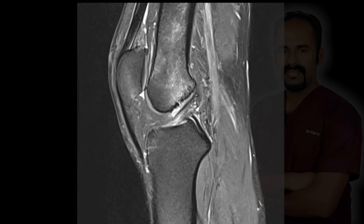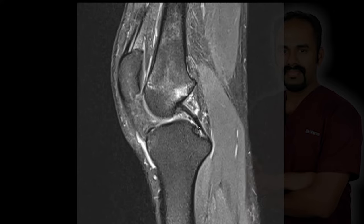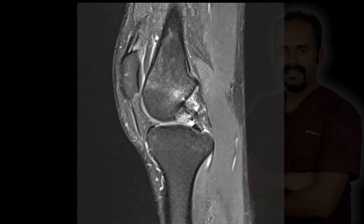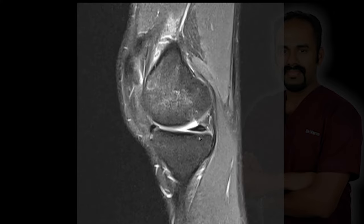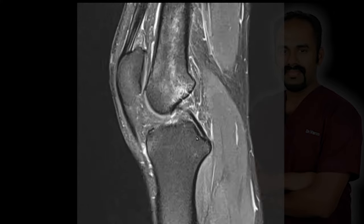The ACL fibers appear parallel to the posterior femoral margin and parallel to the Blumensaat line, but there is intrinsic high signal intensity within the ACL, suggestive of a partial thickness tear. The posterior cruciate ligament appears intact.